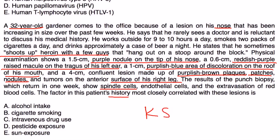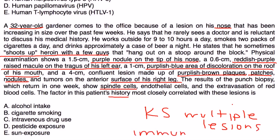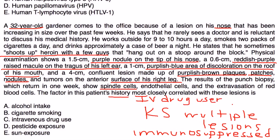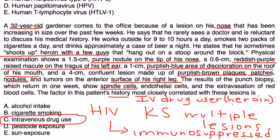This patient clearly has Kaposi sarcoma with multiple lesions and is most likely immunosuppressed. What's very significant in the history is that he is an IV drug user — specifically, he uses heroin. Most likely he acquired HIV from this heroin use by passing infected needles from person to person. If he does have HIV, that's causing the immunosuppression, and consequently he has developed multiple Kaposi sarcoma lesions. The factor in his history most closely correlated with these lesions is his IV drug use, so the answer is C.